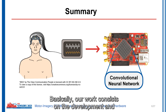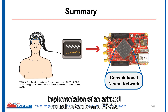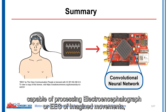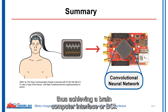Our work consists of the development and implementation of an artificial neural network on an FPGA capable of processing electroencephalograph, or EEG, signals of imagined movements, thus achieving a brain-computer interface, or BCI.